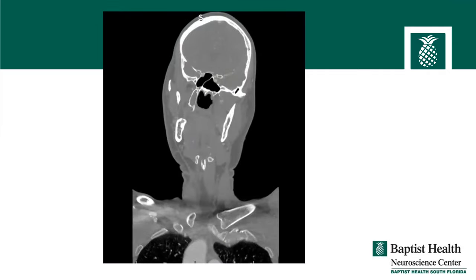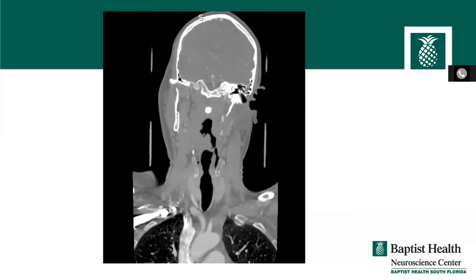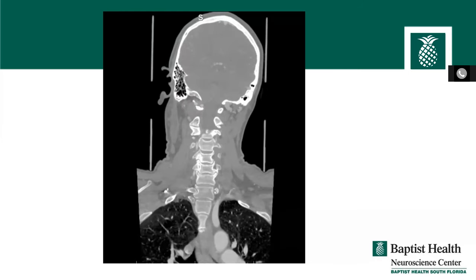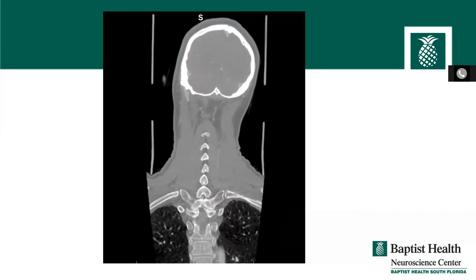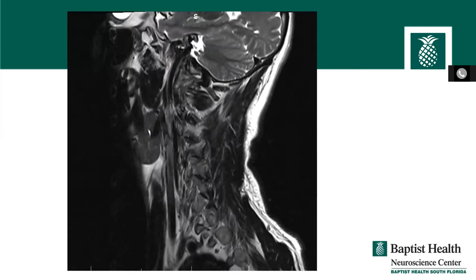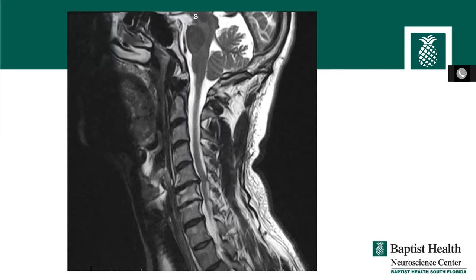On the CTA there is a really long styloid — stylomastoid process — visible on the left. Cervical spine MRI showed C5-6 bulging disc with spinal cord compression, moderate to severe encroachment of the lateral recesses, foraminal and canal stenosis, no abnormal cord signal. C6-C7 bulging disc with moderate to severe encroachment of the lateral recesses and foramina, no spinal cord compression. He also had some malalignment at C7-T1. Cardiac calcium score was zero; EEG was normal.